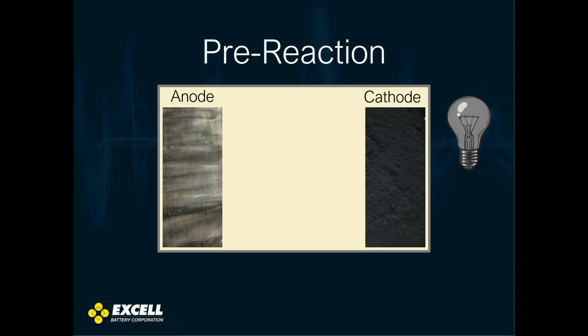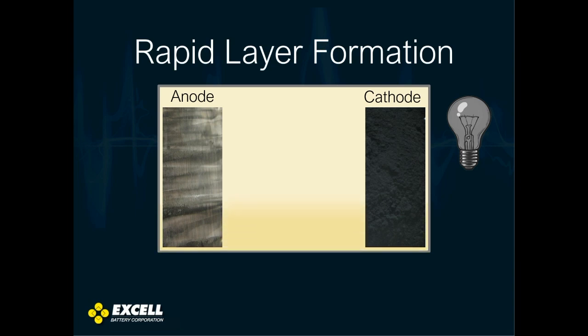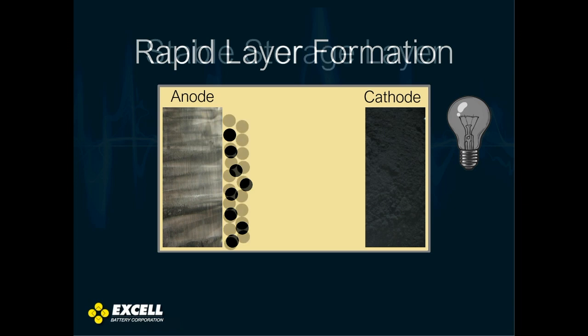Before electrolyte is added to the cell, there's no passivation layer. Once you add thionyl chloride electrolyte, you have rapid formation of the lithium chloride layer, or what we call the passivation layer. And over time, more lithium chloride gets formed on the surface of the anode, becoming thicker, and it actually protects the anode from self-discharging and decaying over time. So it's actually a good thing in the long run.